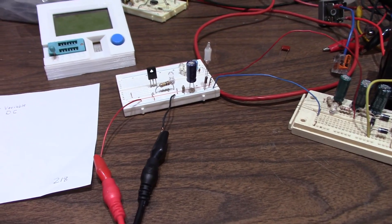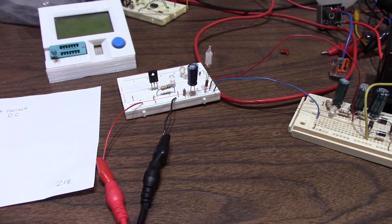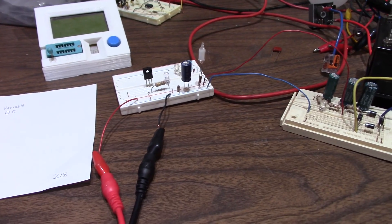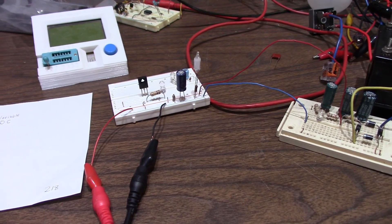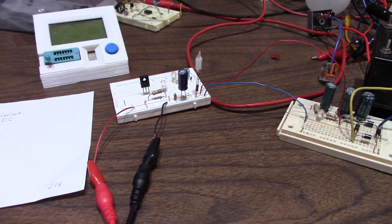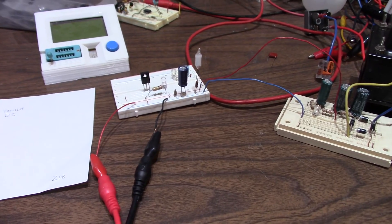On the datasheet, they will list the transistor's breakdown voltage, which is usually the collector-to-emitter voltage, and sometimes, not as often, they'll also give the collector-to-base breakdown voltage, and we'll take a look at that.